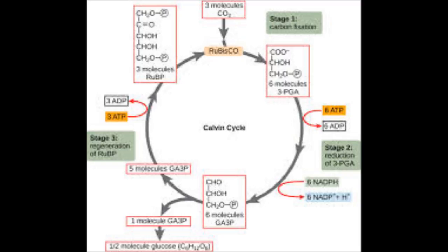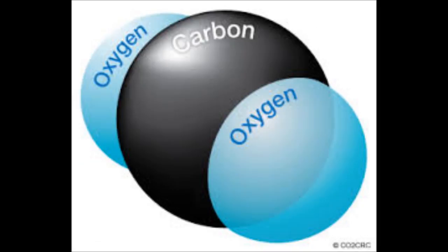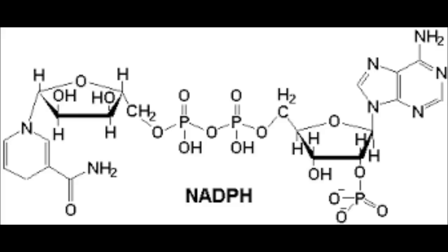The final products of the light reactions that are used in the Calvin cycle are CO2 and the chemical energy that's in ATP and NADPH. These products are used to form organic molecules.